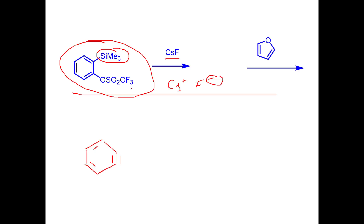The F⁻ interacts with the SiMe₃ (trimethylsilyl) group, and the Cs⁺ interacts with the oxygen of the OSO₂CF₃ group, because CF₃ is an electron-withdrawing group and oxygen itself is also electron-withdrawing. The net result is that the C–Si bond breaks and benzyne is generated.